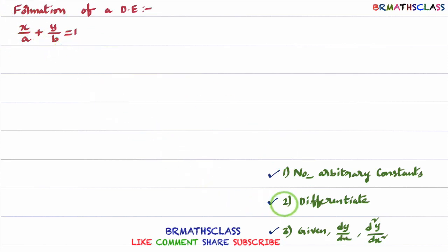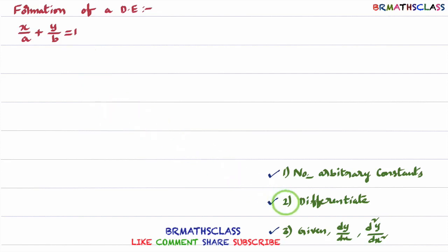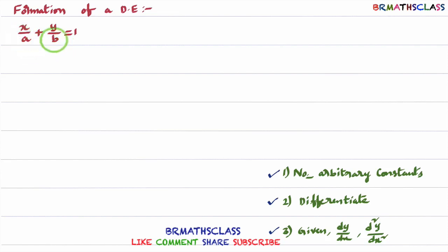So in this function, how many arbitrary constants are there? Two arbitrary constants, A and B. So how many times do we need to differentiate? We need to differentiate two times. In the process of differentiation, we will try to eliminate the arbitrary constants A and B. I will now differentiate this one time.